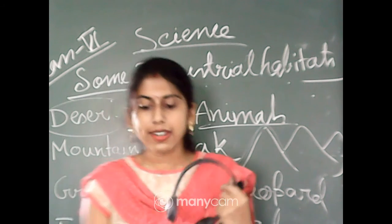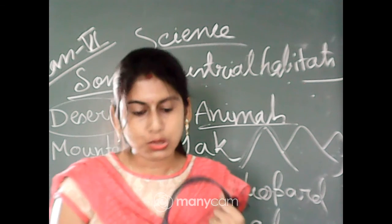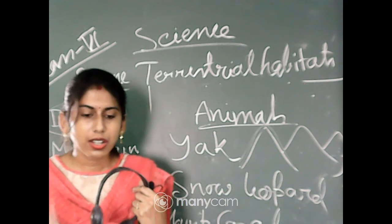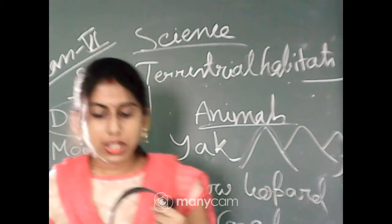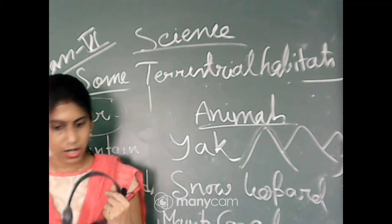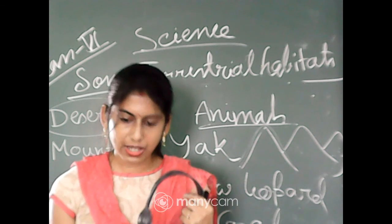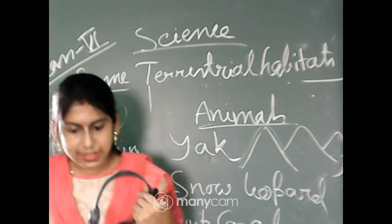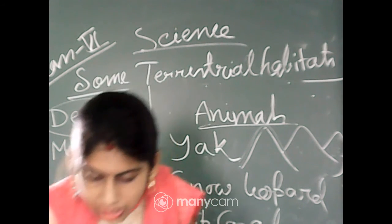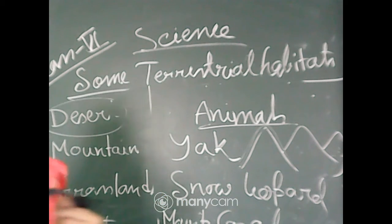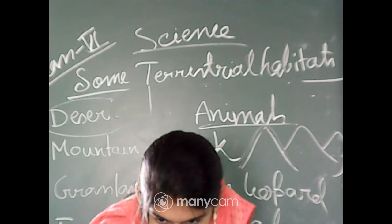These are the different examples and characteristics of animals and plants of the mountain region. Today I have covered the desert habitat and mountain habitat. After finishing the chapter, I will help you write some question answers. In my next class, I will discuss the grassland and some ocean habitats. Any problems? Understood, everyone?